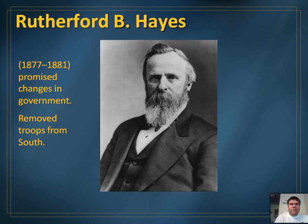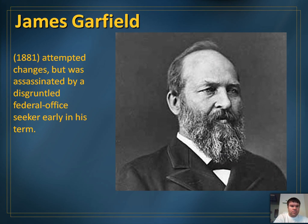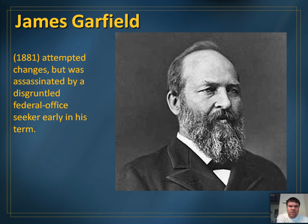After Grant, we had Rutherford B. Hayes. He removed troops from the South, which eventually led to southern states creating segregation laws. He promised changes in government, but removing those troops allowed segregation to move forward. Then James Garfield, the president after Hayes, tried to make changes, but in his first year as president he was assassinated by a disgruntled federal office seeker — someone who believed they should have gotten a government job for helping Garfield get elected, and because they didn't get the job, they killed him.